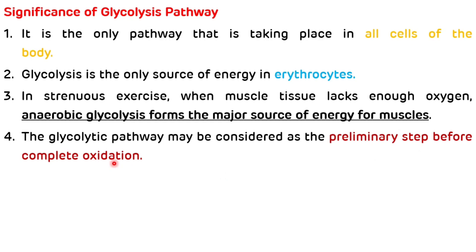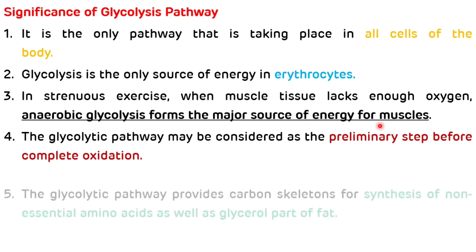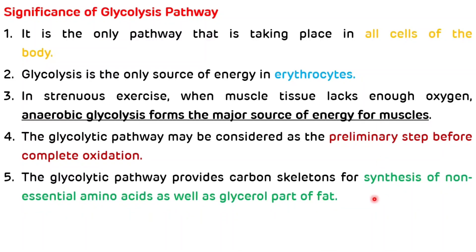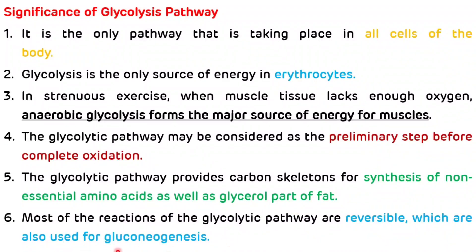Another significance of glycolysis is that in strenuous exercise, when muscle tissue lacks enough oxygen, anaerobic glycolysis forms the major source of energy for muscle contraction. The glycolytic pathway also provides carbon skeletons for the synthesis of various non-essential amino acids as well as for the glycerol part of fat. The majority of reactions of glycolysis are reversible, which are also used for gluconeogenesis — that is synthesis of new carbohydrates from non-carbohydrate precursors like lactate, glucogenic amino acids, acetyl-CoA, and glycerol part of fat.